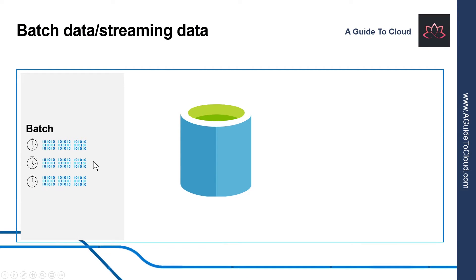In batch processing, newly arriving data elements are collected into a group. The whole group is then processed at a future time as a batch. Exactly when each group is processed can be determined in a number of ways — for example, based on a scheduled time interval, when a certain amount of data has arrived, or as a result of some other event. An example of batch processing is the way credit card companies handle billing: the customer doesn't receive a bill for each separate purchase, but one monthly bill for all that month's purchases.